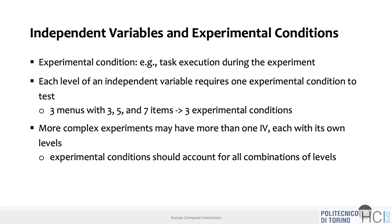Each level of an independent variable requires one experimental condition. With three menu sizes, you have three conditions — the same task repeated three times, once per condition. Or you can have multiple tasks repeated across all three conditions, giving you nine tasks total. Experiments with just one independent variable are the simplest.